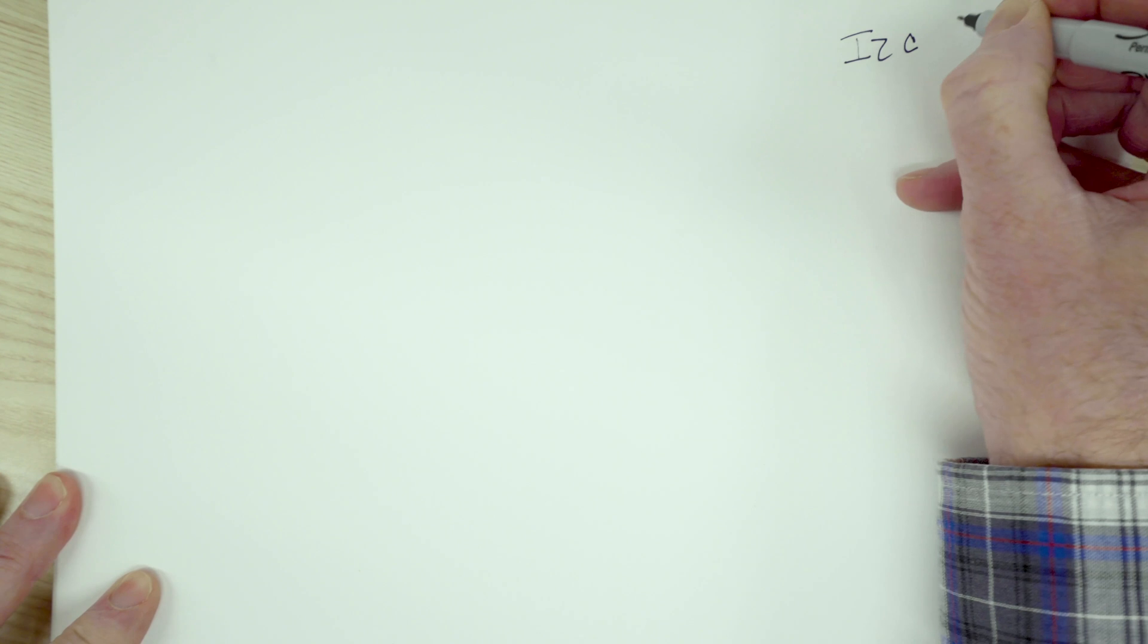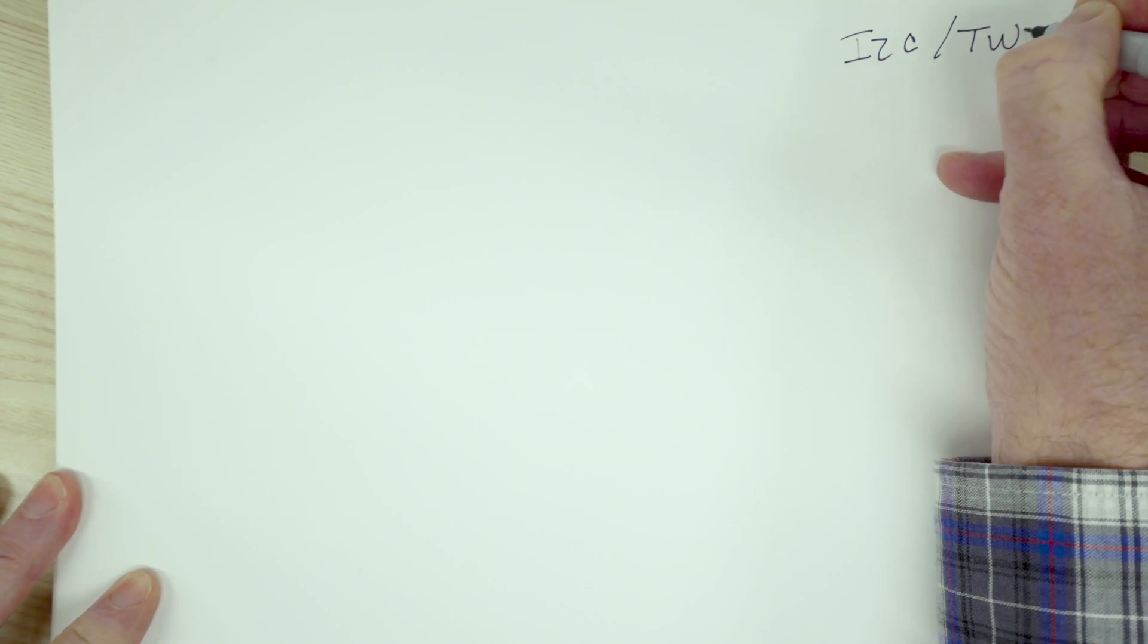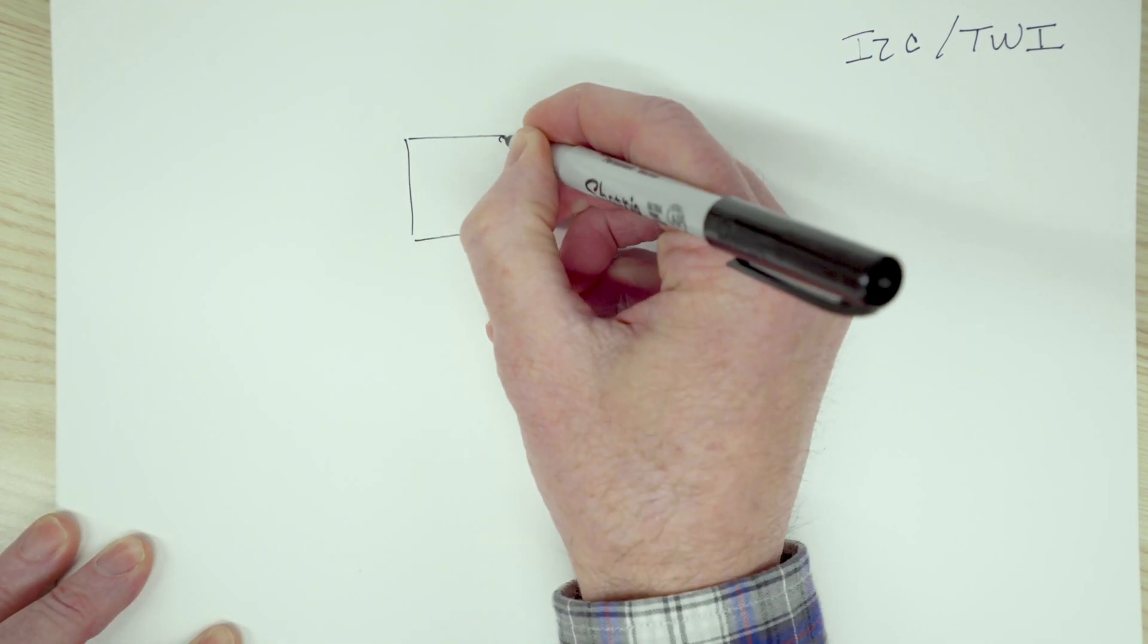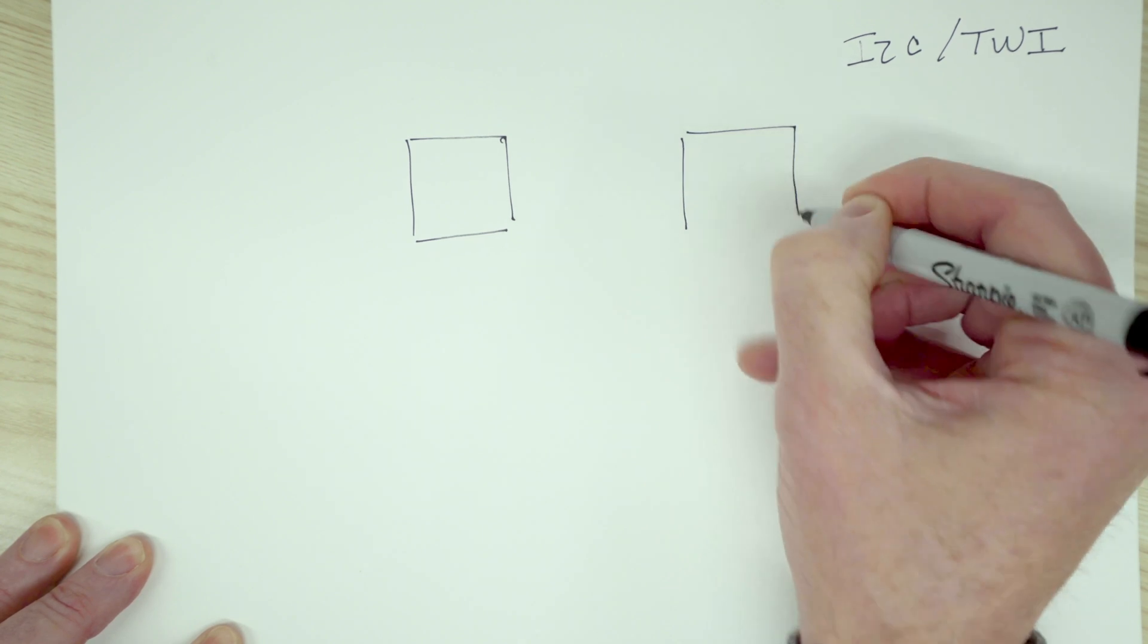Okay, let's take a look at I2C, sometimes called TWI for two-wire interface. So essentially, I2C allows integrated circuits on a printed circuit board to communicate.